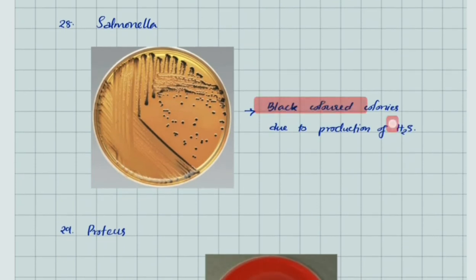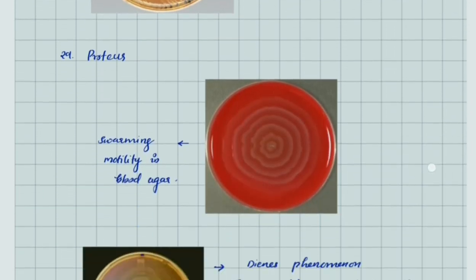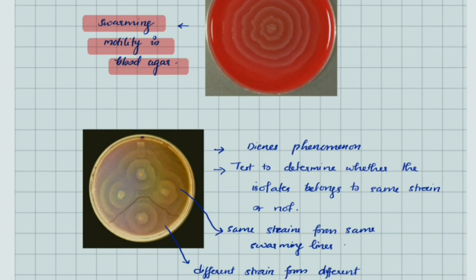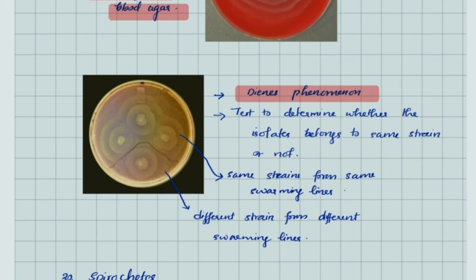Salmonella gives black colored colonies due to production of hydrogen sulfide in Salmonella-Shigella agar. Proteus shows typical swarming motility in blood agar and characteristic Dienes phenomenon. Dienes phenomenon is used to determine whether isolates belong to the same strain. If three isolates are of the same strain, they form a same swarming line, and different strains form different swarming lines.